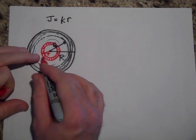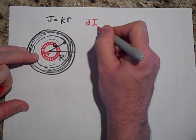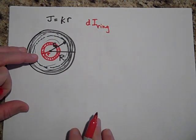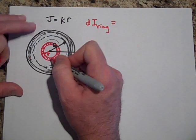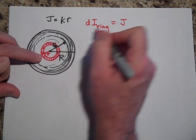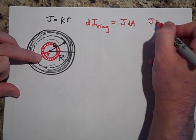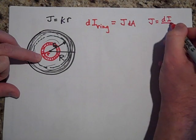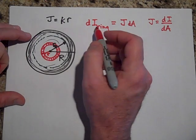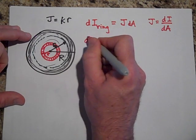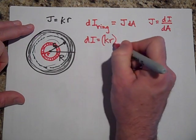Okay, so the current that goes through this little ring is a small current. So the current through the ring, I'll put it in red because I'm talking about the red part, that's going to be equal to the J there, whatever the J is there, times that little area. In other words, J is dI/dA. Well, that current then, through that ring, dI, is equal to J, which is KR, times the dA.